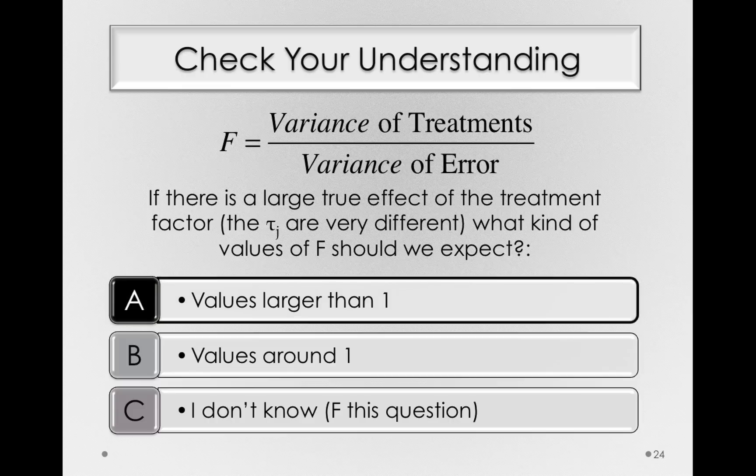If the variance of treatments in the population is very large and we're taking a sample estimate of it, then the ratio of our variance of treatments to variance of errors should be, on average, larger than 1. So our F statistic will be able to capture this difference between what we expect by chance and what we actually observed.